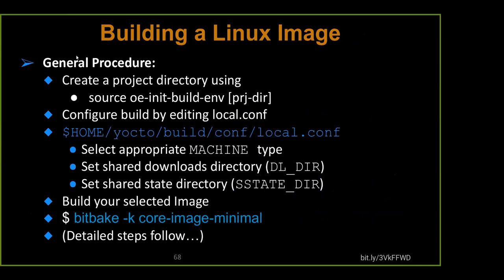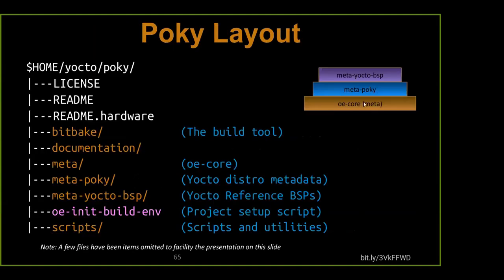Let's talk about generally how we're going to build a Linux image. We create the project by sourcing the OE-init-build-env script. We configure the build by editing local.conf — at minimum, telling it what machine to build for and where to find downloads and the shared state cache. Then we go ahead and build a selected image. These core images are all located in that meta directory.